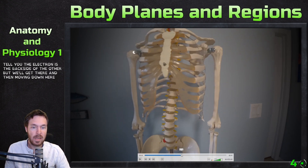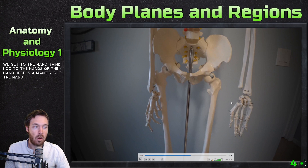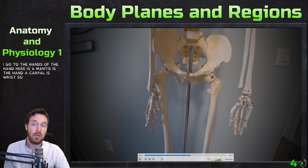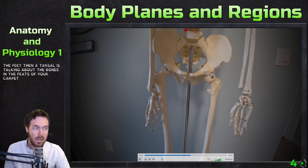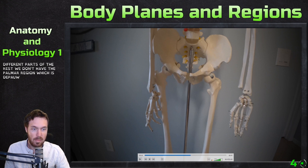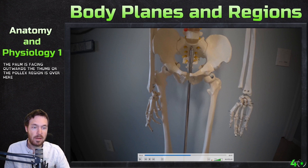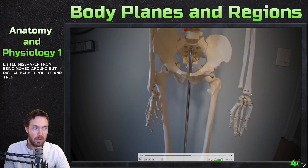Moving down to the hand: the manus is the hand. Carpal refers to the wrist, while tarsal refers to the bones of the feet. The different parts of the wrist include the palmar region, which is the palm — and remember this is facing outward, so the thumb or pollex region is over here. The fingers are all digits. So we have digital, palmar, pollex, and carpal. Carpal tunnel is right there — that's most of the arm.